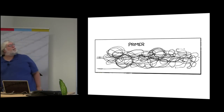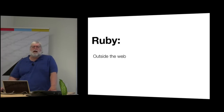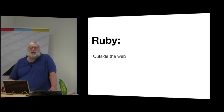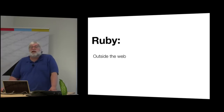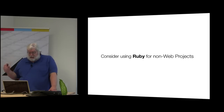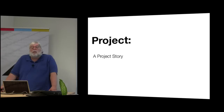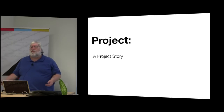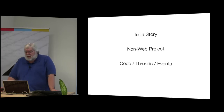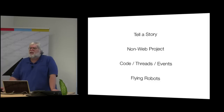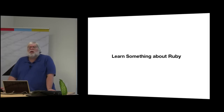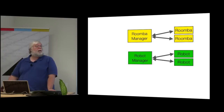I gave this talk at Big Ruby wanting to show Ruby outside the web. Most people use Ruby for Rails or web work, and I wanted to give people an idea that Ruby is good for other things. I'm going to tell a story about a particular project — changing the names to make it anonymous and to introduce a much more fun problem domain — involving flying robots, code, threads, and events.